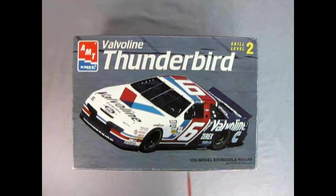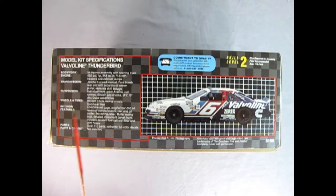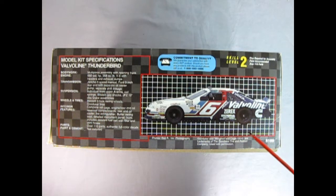This is a 125th scale model kit with a photo of the actual car right on the box. On this side of the box we get a wonderful write-up of our Valvoline Thunderbird. This is a skill level 2 model kit for ages 10 and up. It has over 110 parts and will require paint and glue.